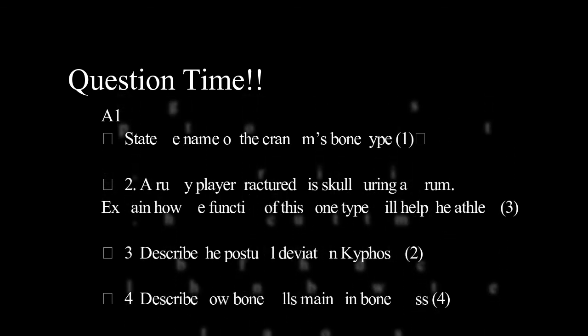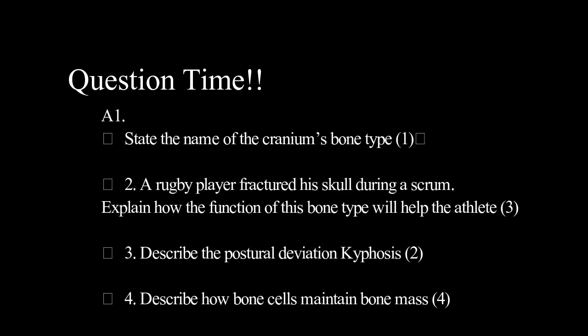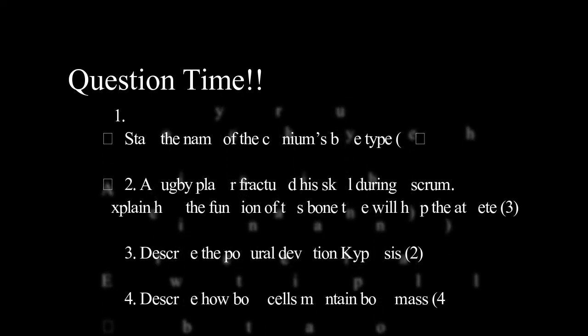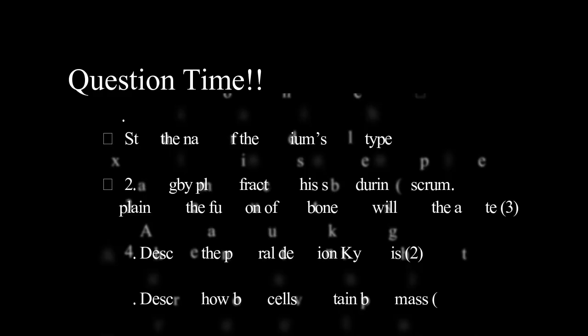Answers: the cranium is a flat bone. For the rugby player, the skull provides protection as it forms a hard shell around the brain and absorbs impact to protect against concussion or brain damage. Kyphosis is when the back is hunched due to an abnormally large curve of the thoracic vertebrae. Bone mass is maintained through the action of osteoblasts and osteoclasts — osteoblasts are responsible for increasing the bone matrix after the osteoclasts have absorbed bone tissue during growth or repair.